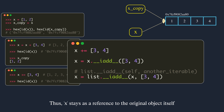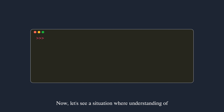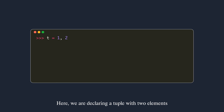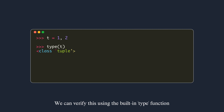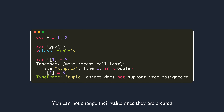Now let's see a situation where understanding augmented assignment operators is useful. Here we declare a tuple with two elements — remember the round brackets are not necessary; what makes it a tuple is the comma. You can verify this using the built-in type() function. Tuples are immutable — you cannot change their value once created, and an exception is raised when you try to modify a tuple.